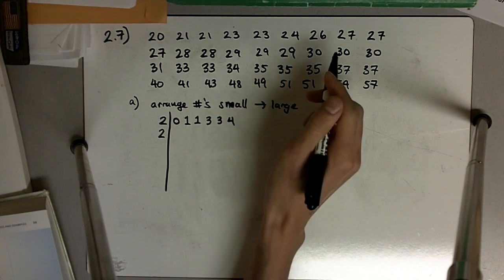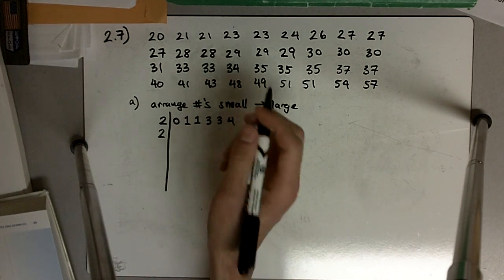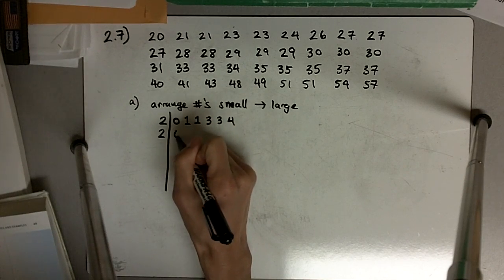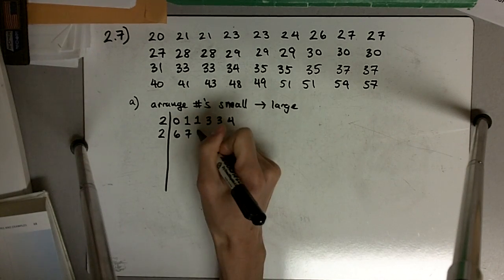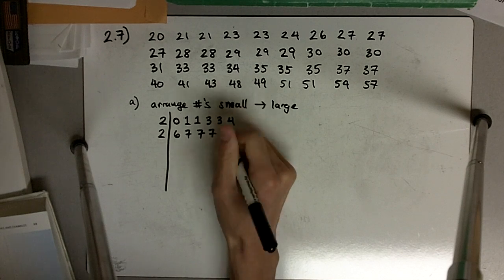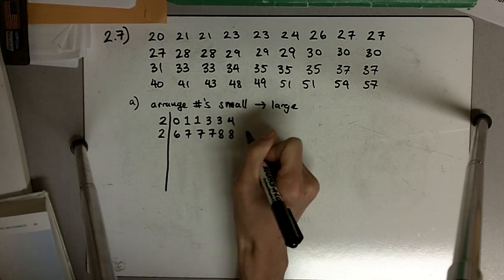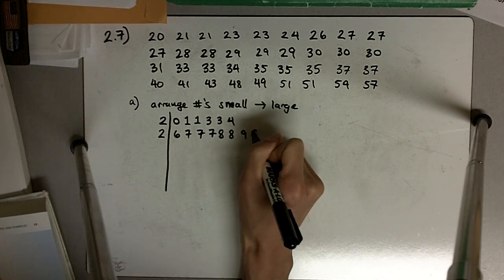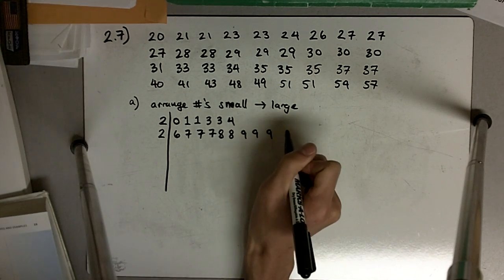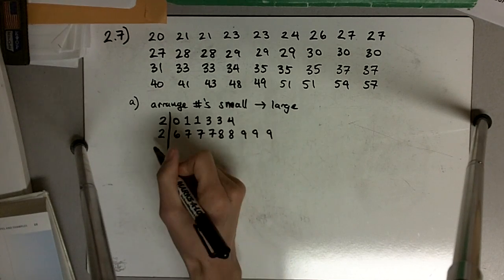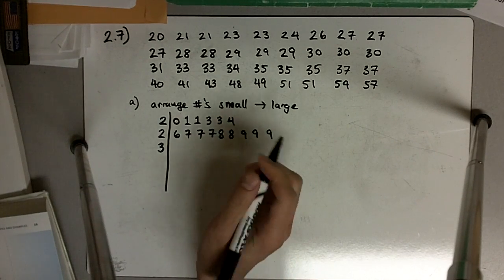The 26 is now in the second part, the upper 20s, so it's going to be 26, 27, 27, 27, 28, 28, 29, 29, 29.